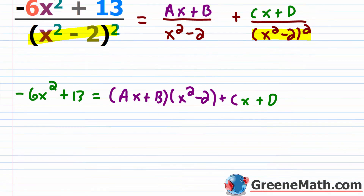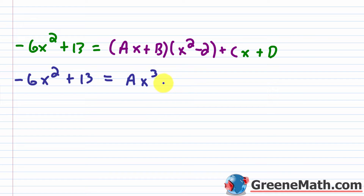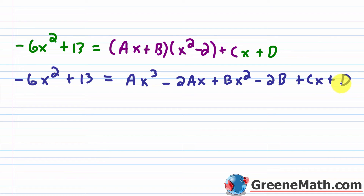From here, just some basic algebra — it can get a bit tedious. We have negative 6x squared plus 13 equals, after FOILing out ax plus b times x squared minus two: ax cubed, minus 2ax, plus bx squared, minus 2b, then plus cx and plus d.